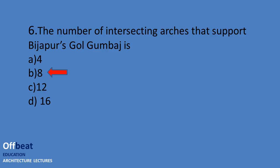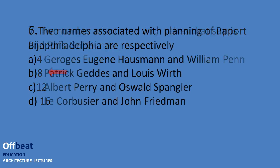Two names associated with the planning of Paris and Philadelphia respectively. You can see four options here. The correct answer is: for Paris it is Joseph Eugene Haussmann, and for Philadelphia it is William Penn.